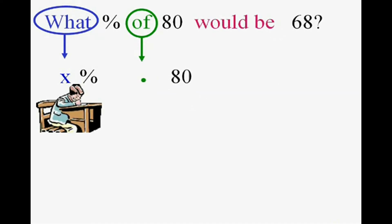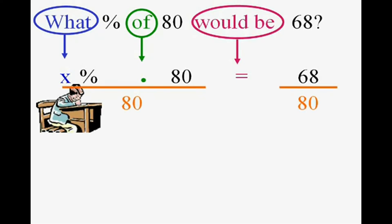Now, 'would be,' or 'could be,' or 'is' is going to be equals. And sixty-eight is ready to go. So we've got to get x alone. Who's keeping it from being alone? The eighty. Since he's multiplying, I'll divide. And x percent is going to be the fraction sixty-eight over eighty.